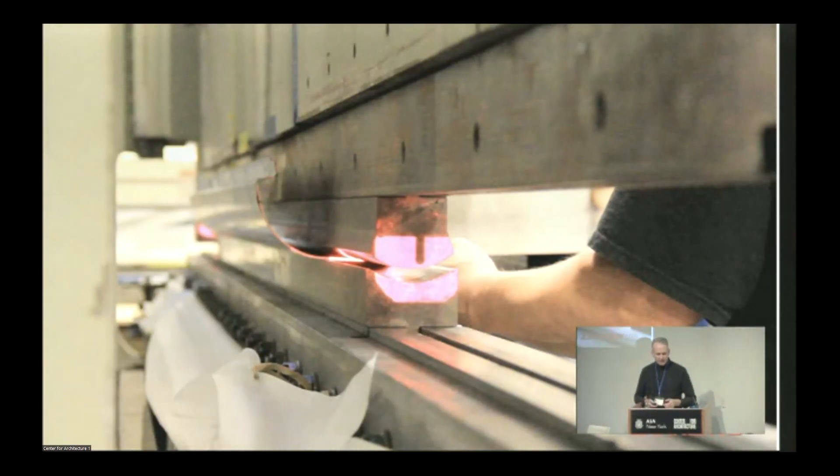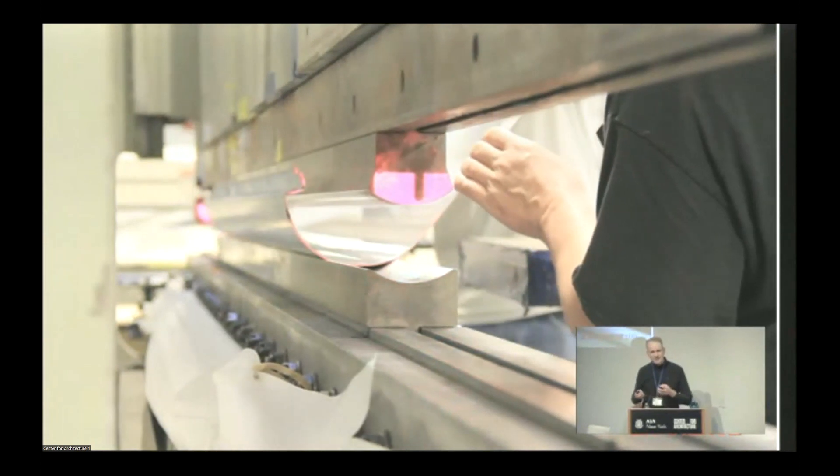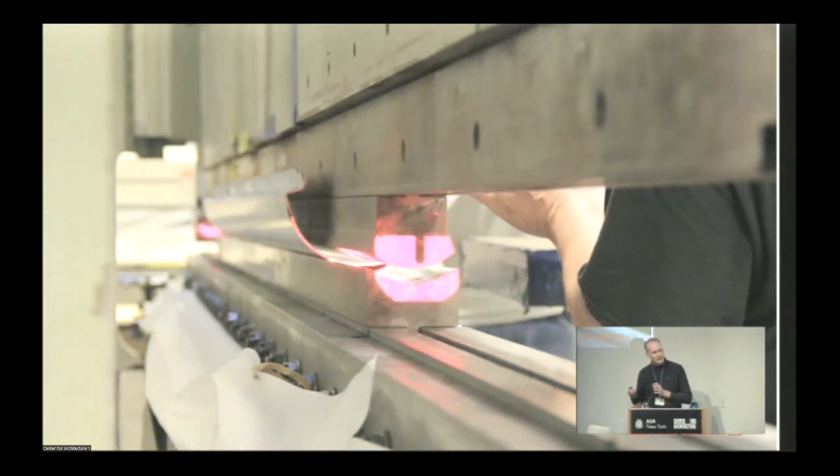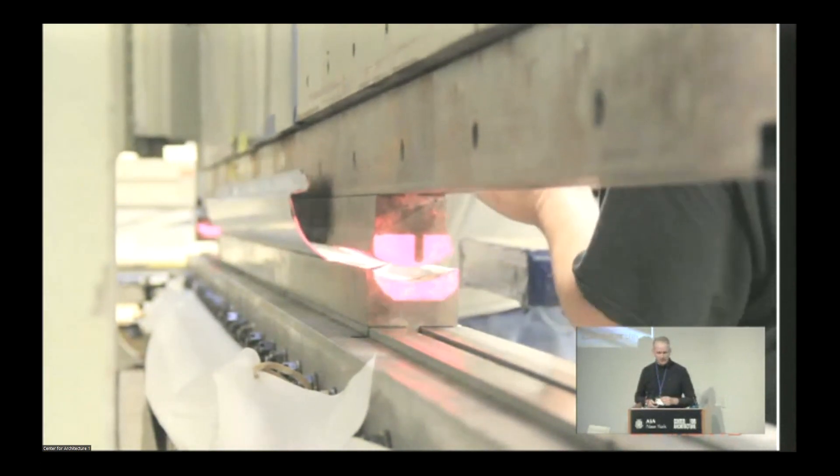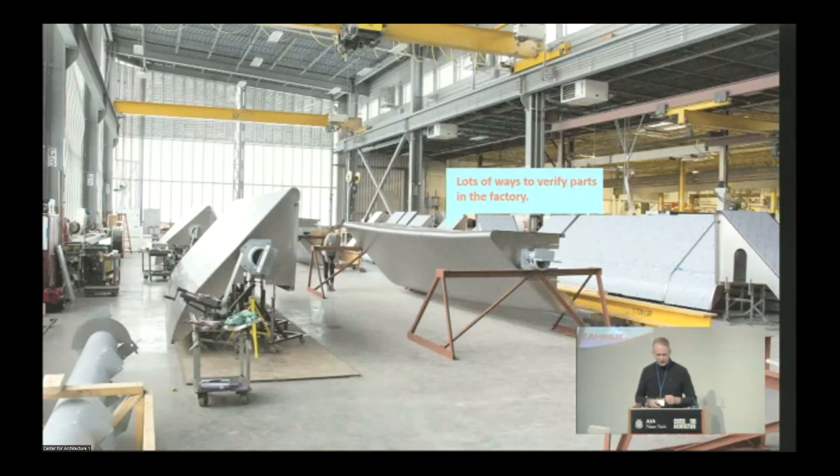We cut them out, we form them, we engineer the tooling, we do empirical testing to make sure the material is going to behave the way we expect. We take that back to the model and make sure that our models are actually fabricatable. We use parametric jigs as well. This is an interchangeable jig where things slide back and forth.